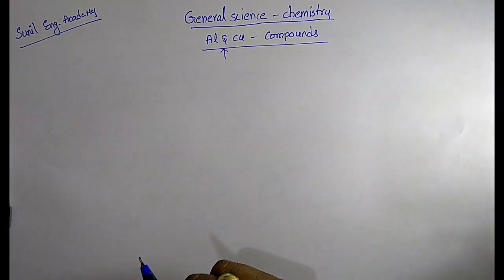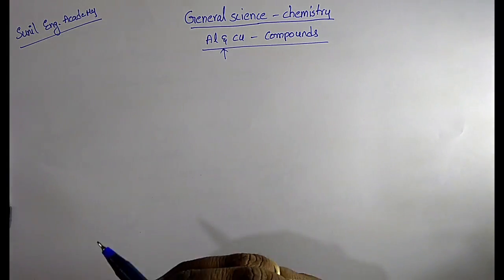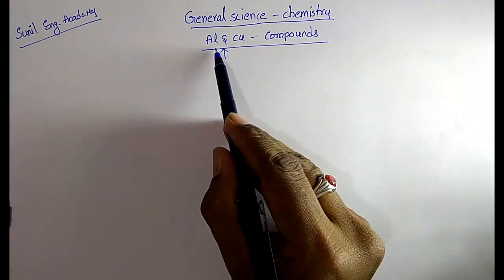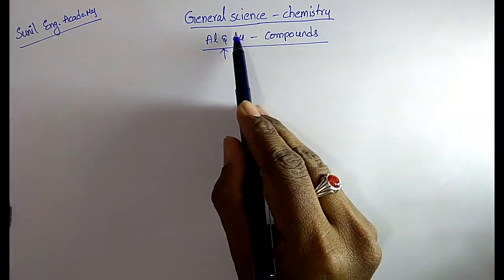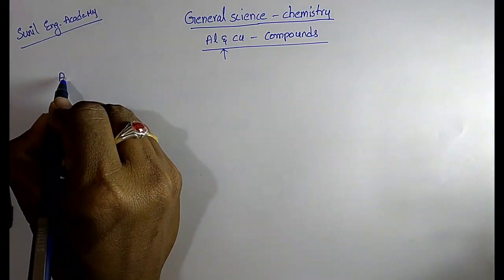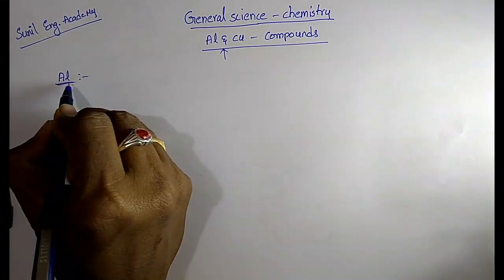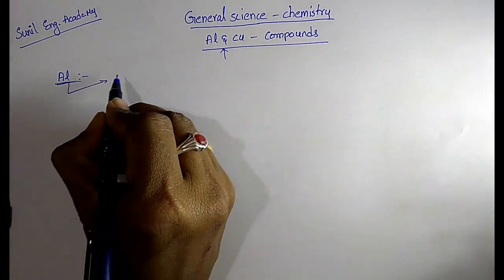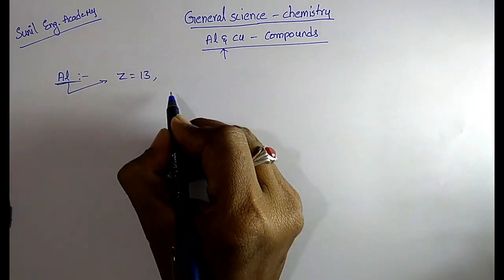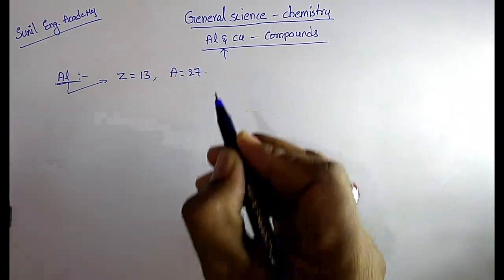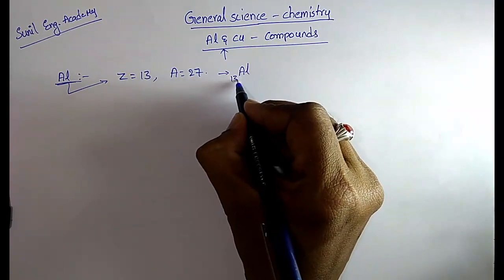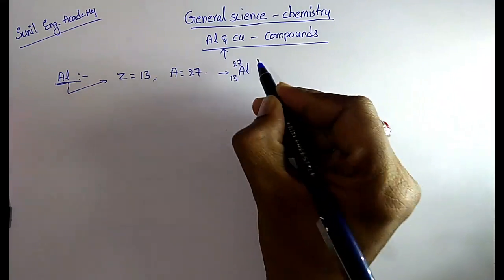In the previous classes we have completed sodium, magnesium, calcium and their compounds. In this class I am going to discuss aluminium and copper and their compounds. The atomic number of aluminium is 13 and mass number is 27.